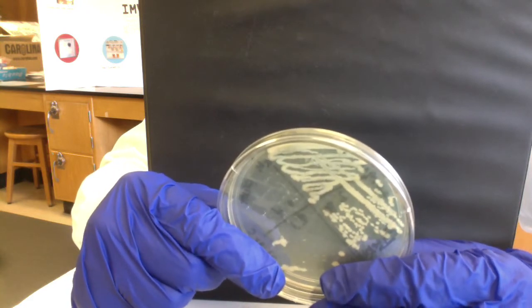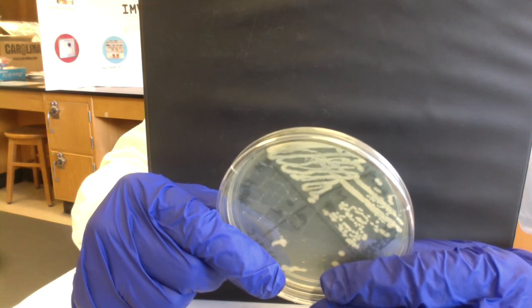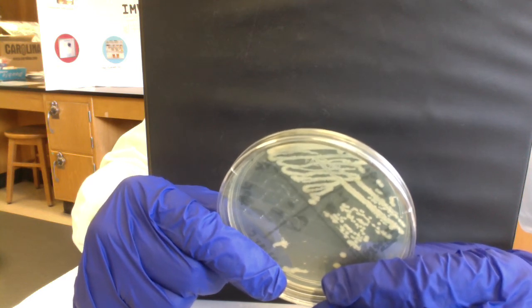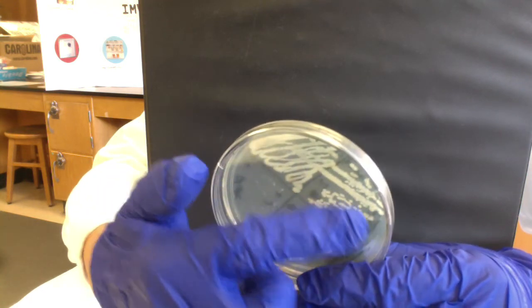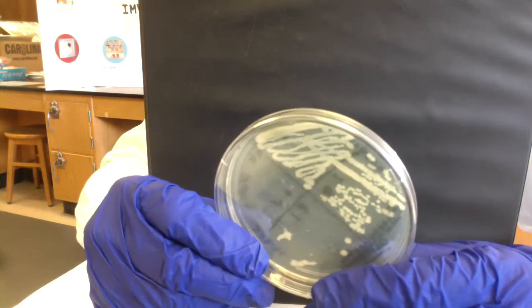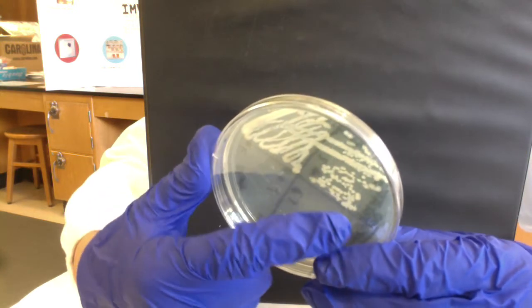The trick was, we sterilized our loop, we didn't get another loopful of broth, we sterilized our loop, cooled it, and then pulled some of the bacteria from quadrant one into quadrant two and streaked them out over the surface. You can see we're starting to get them separated, almost seeing some isolated colonies in quadrant two.